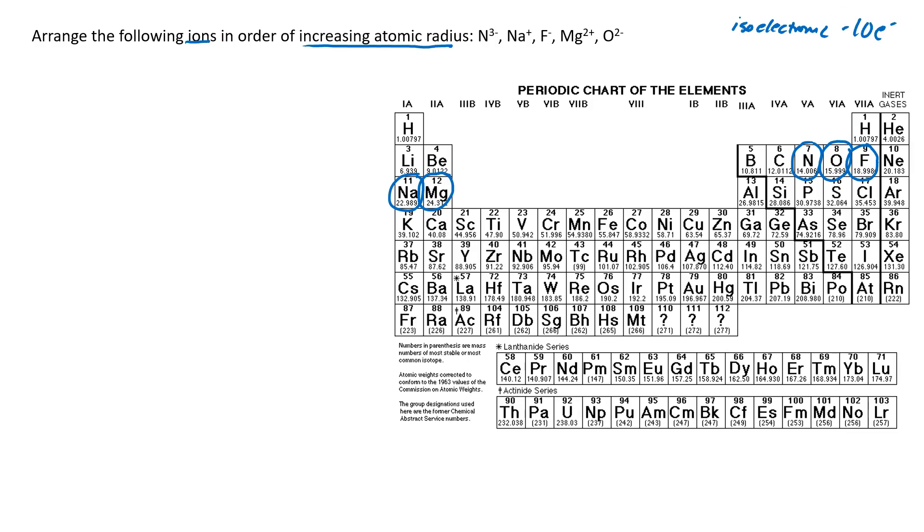So what you want to look at here, again, is the atomic number. The greater the atomic number, the smaller the ion. So nitrogen has an atomic number of 7, sodium's is 11, fluoride's is 9, magnesium's is 12, and oxygen's is 8. So in order of increasing atomic radius.